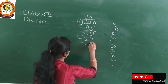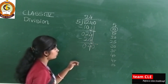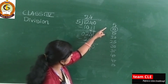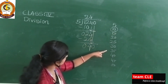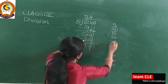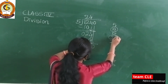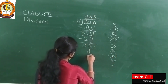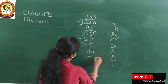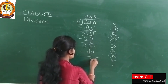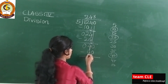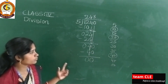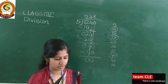Bring down the 0 — it becomes 40. Check the table: 5×8=40. Subtract: 0 minus 0 is 0, and 4 minus 4 is 0. This is how you divide the numbers.